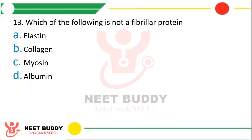Question: Which of the following is not a fibrillar protein? Option A, elastin; option B, collagen; option C, myosin; option D, albumin. The correct answer is option D, that is albumin. Albumin is a globular protein, not a fibrillar protein.